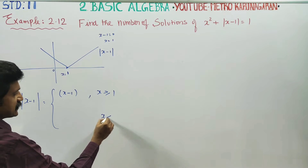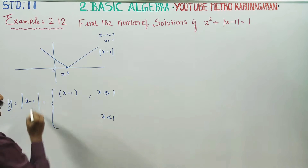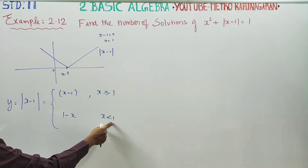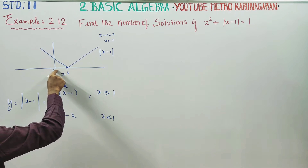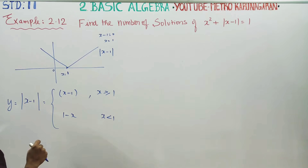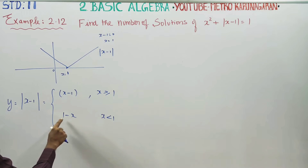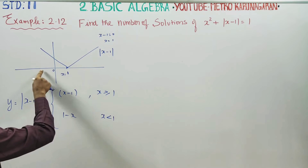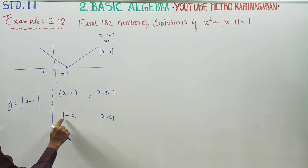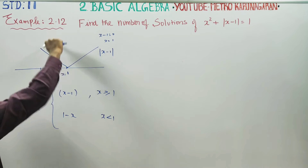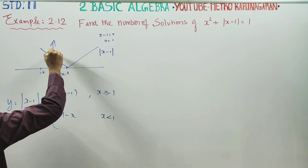If x is less than 1, the formula becomes 1 minus x. For example, if x is 0, then 1 minus 0 is 1 — positive. If x is minus 1, then 1 minus of minus 1 is 2 — positive. If x is minus 2, then 1 minus of minus 2 is 3 — positive value.